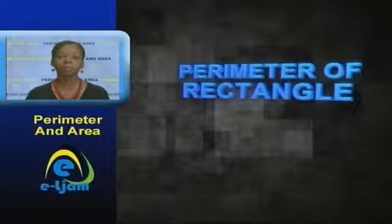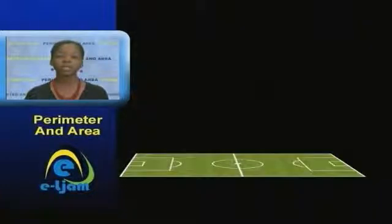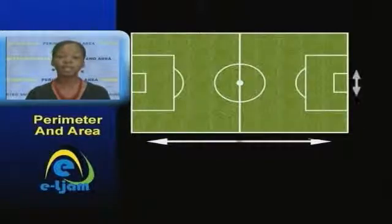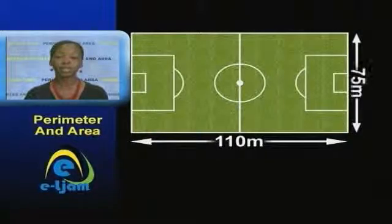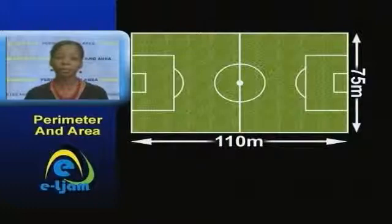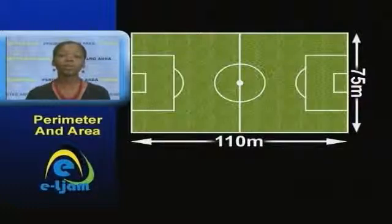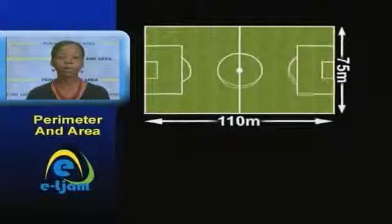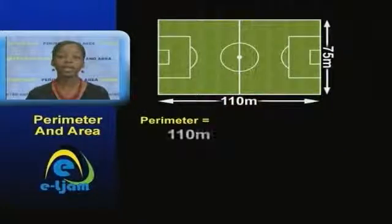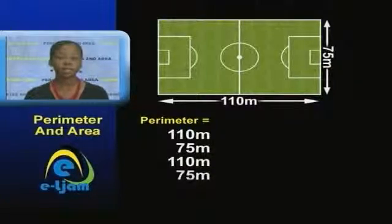A similar formula can be derived for the total distance of a shape that is not a square. A football field is rectangular in shape. Its length measures about 110 meters and its width 75 meters. Since this is a rectangle, we know that there are two pairs of equal sides. So the perimeter would be found by adding 110 meters plus 75 meters plus 110 meters plus 75 meters, which would give us 370 meters.